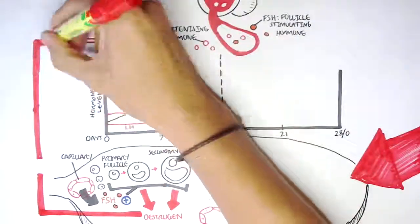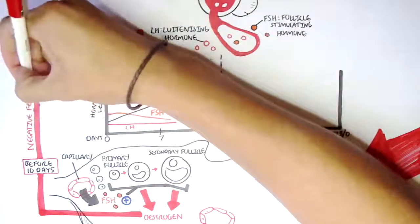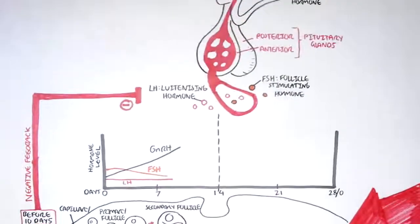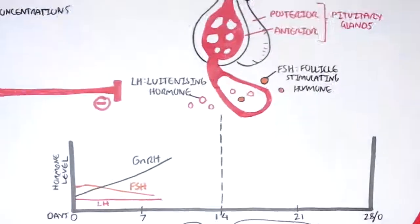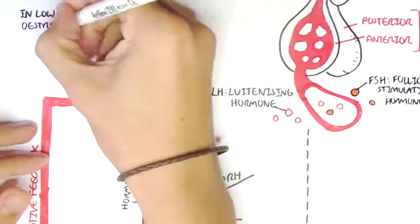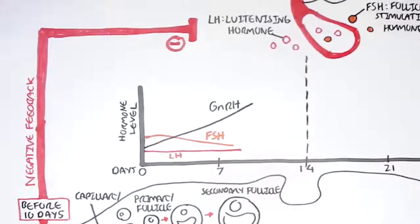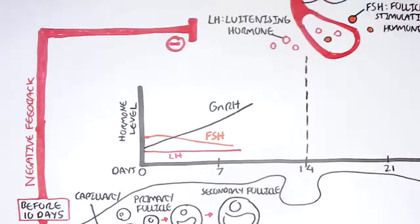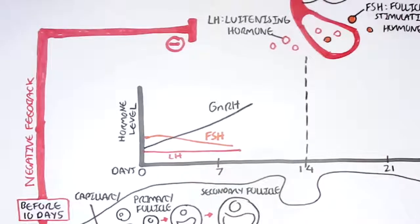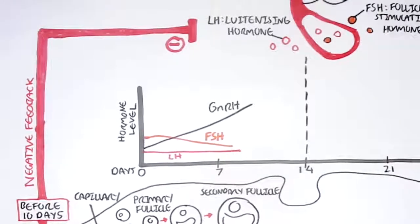In the first 10 days of the menstrual cycle, at low concentrations, estrogen has a negative feedback on the pituitary gland, inhibiting the release of luteinizing hormone. That is why we only see a steady level of LH in the blood — even though GnRH is stimulating LH release, low-concentration estrogen inhibits it. Additionally, FSH is secreted primarily in response to low estrogen concentrations, so when estrogen levels rise, FSH levels fall — explaining the steady drop in FSH seen on the graph.